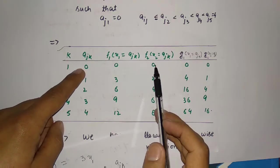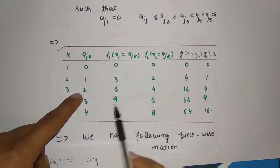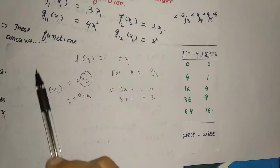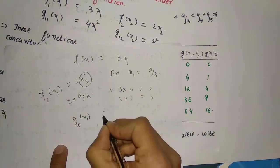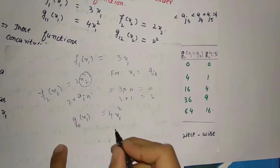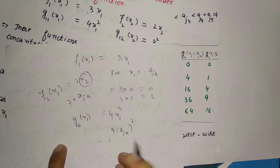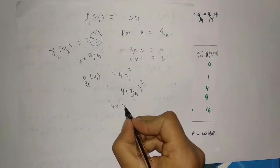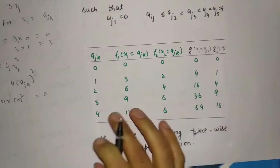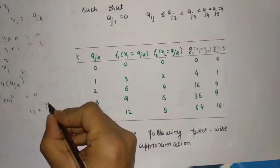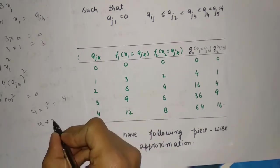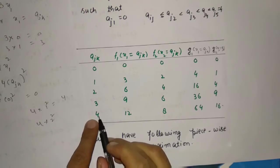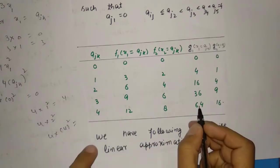So 2×0 = 0, 2×1 = 2, 2×2 = 4, 2×3 = 6, 2×4 = 8. In the same way I find g₁₁(x₁) = 4x₁². Substituting x₁ = a_jk: 4×0² = 0, 4×1² = 4, 4×2² = 16, 4×3² = 36, 4×4² = 64.